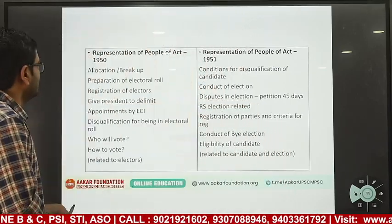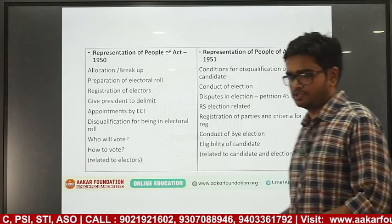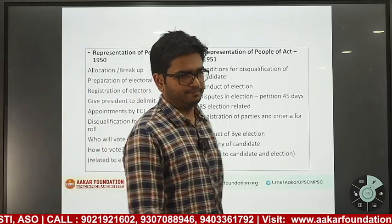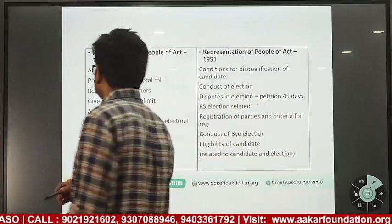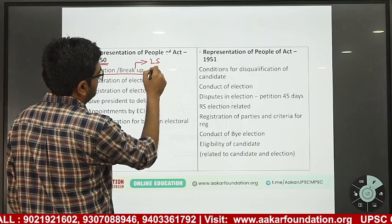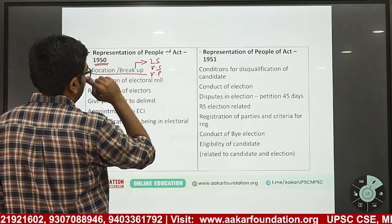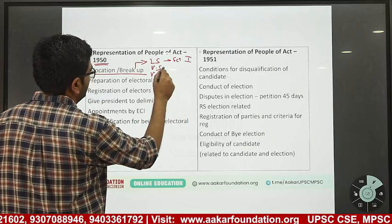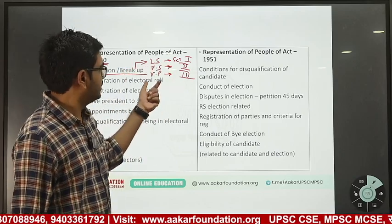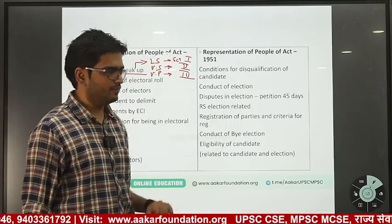Let us move on to the Representation of People Act. As elections are approaching, this becomes important. There are two acts: RPA 1950 and RPA 1951. RPA 1950 talks about allocation and breakup — Schedule 1 of the act has the breakup for Lok Sabha, Schedule 2 for Vidhan Sabha, and Schedule 3 for Vidhan Parishad (MLCs). It also covers preparation of the electoral roll, registration of electors, and gives the President the power to delimit — i.e., delimit Vidhan Sabha and Lok Sabha constituencies.